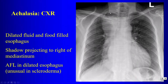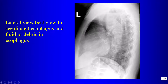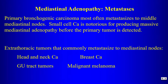On chest radiograph, achalasia presents as a large mass extending down, often flopping to the right so the right heart border appears medial to the opacity. The lateral view is key — it shows anterior tracheal deviation and an air-fluid level, with the mass extending along the esophageal course to the gastroesophageal junction. We should not miss this characteristic appearance.